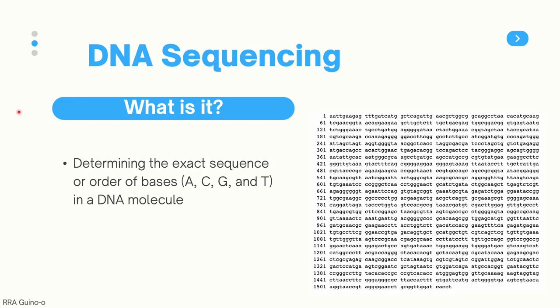What is DNA sequencing? This is the process of determining the sequence or order of base pairs in a given molecule of DNA.